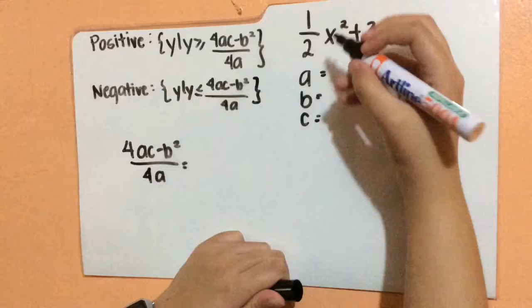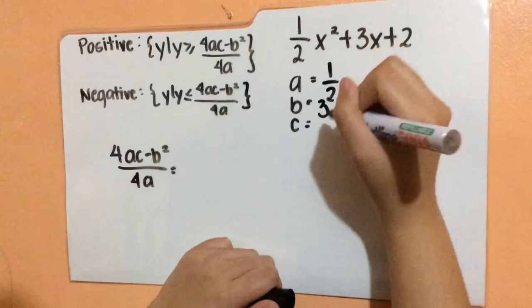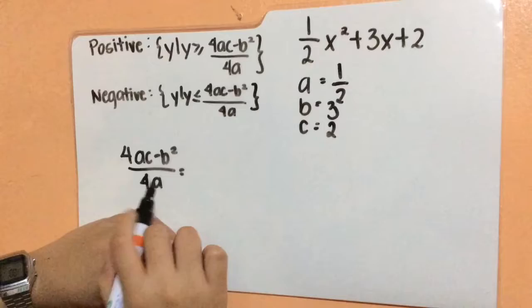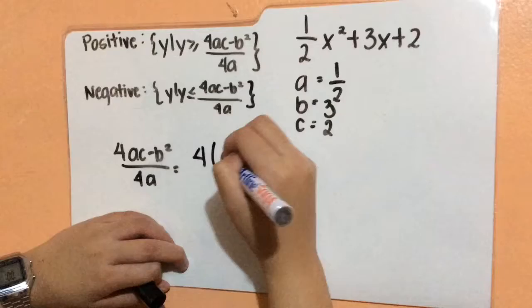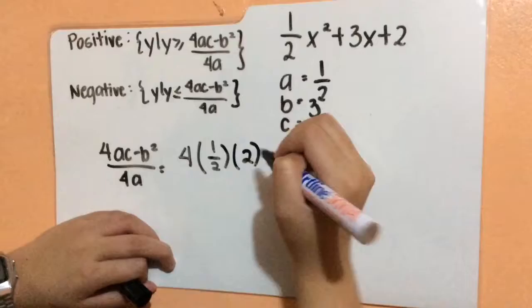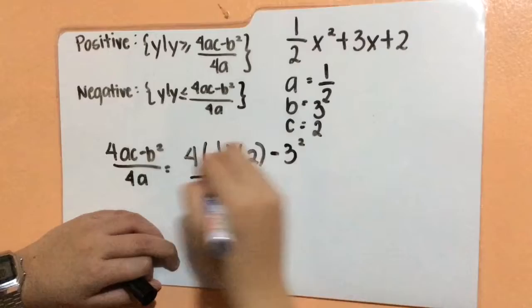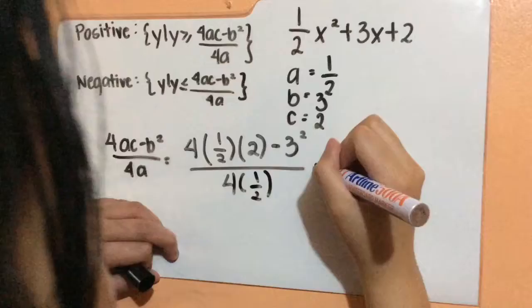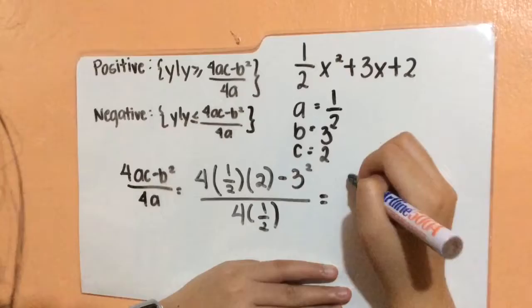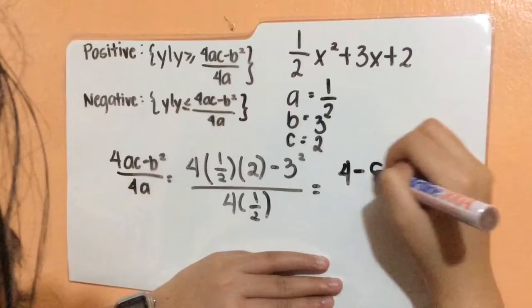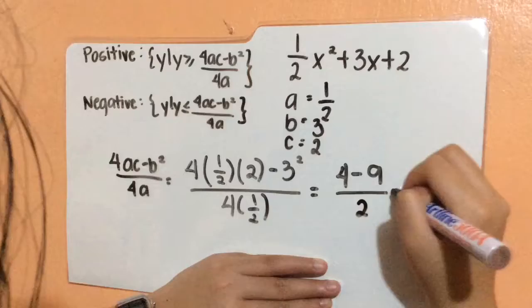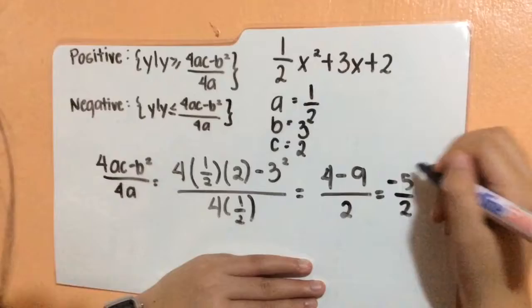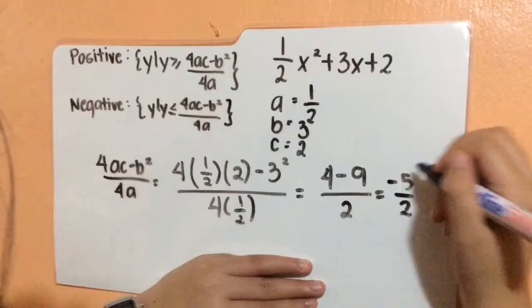For the next given, it is positive, so we will be using the positive formula. A is 1.5, b is equal to 3, and c is equal to 2. So 4 times 1.5 multiplied by 2, minus 3 squared, all over 4 multiplied by 1.5. That gives us 12 minus 9, all over 6, which equals negative 5 over 2. The answer is y such that y is greater than or equal to negative 5 over 2.